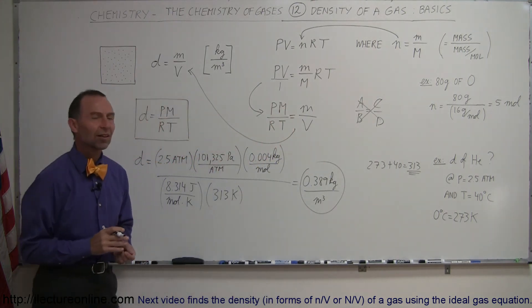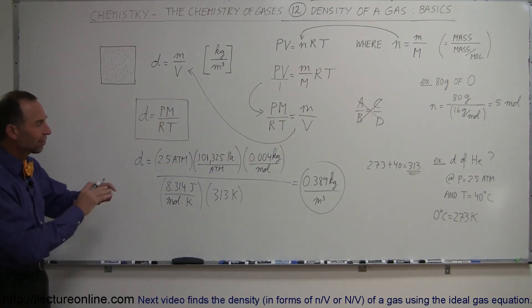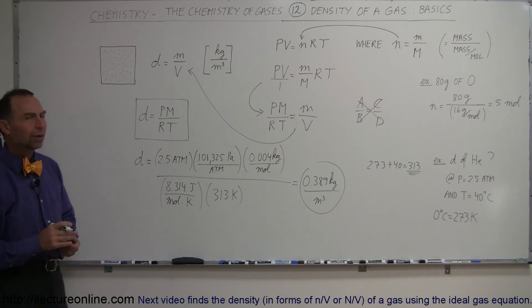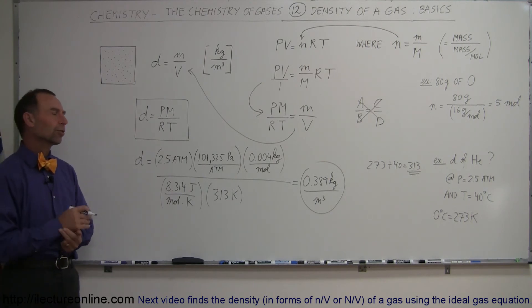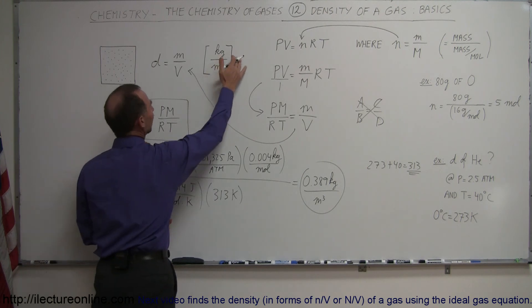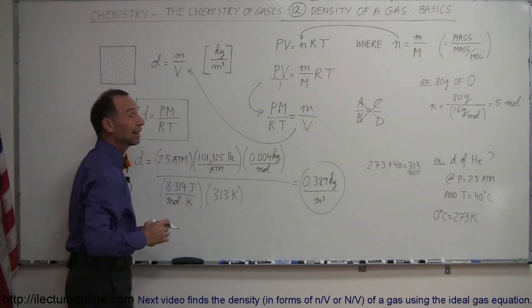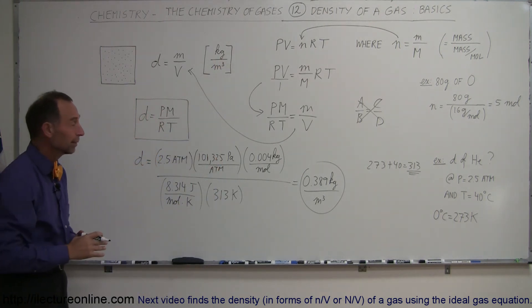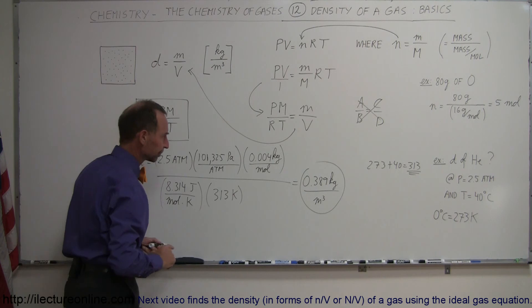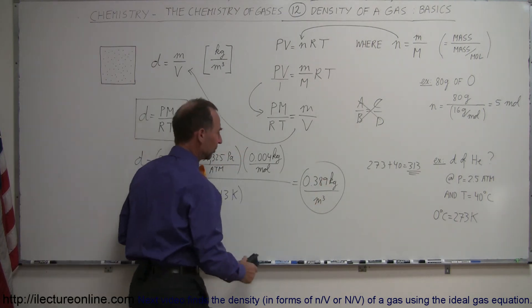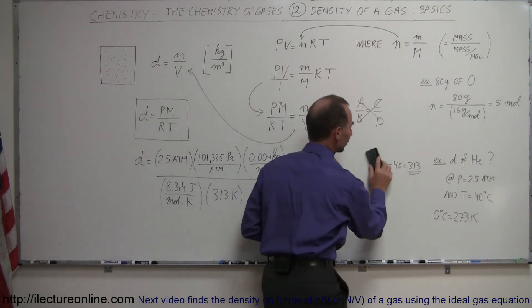That's the density — a little less than a pound of helium gas in a cubic meter. What if we want to convert that to grams per liter? Sometimes instead of using the standard units of kilograms per cubic meter, we prefer grams per liter in chemistry. Let's convert that.